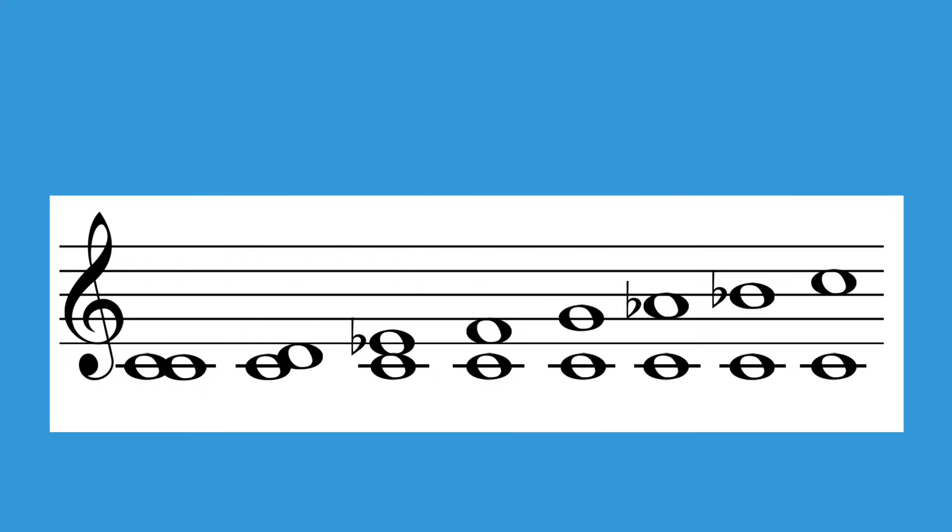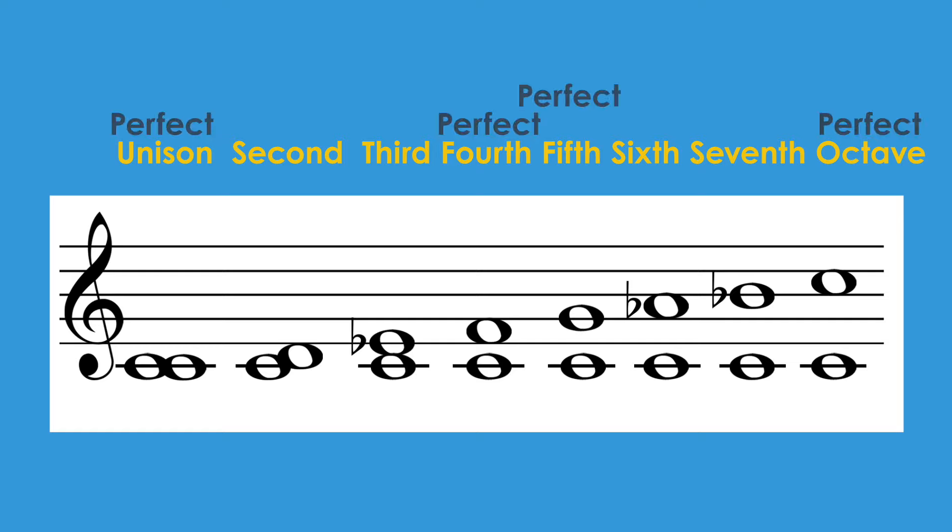Now, let's look at a minor scale. If you notice, the distances stay the same. You can double check by counting the lines and spaces. However, some of the types of the intervals will change. The unison, fourth, fifth, and octave remain perfect.